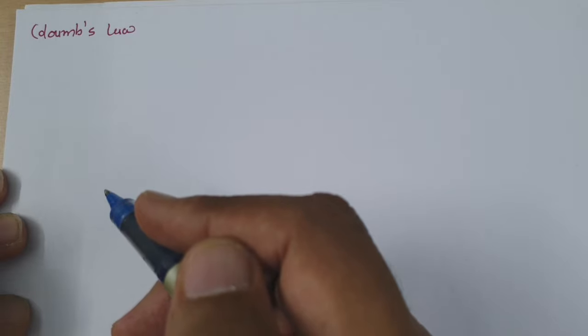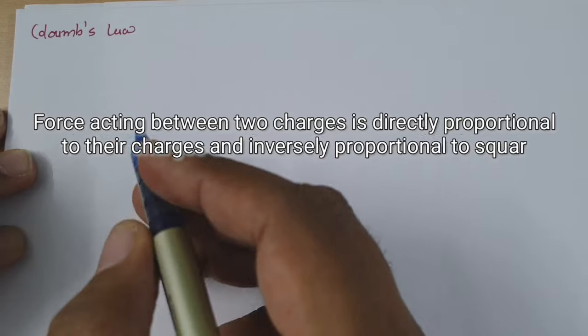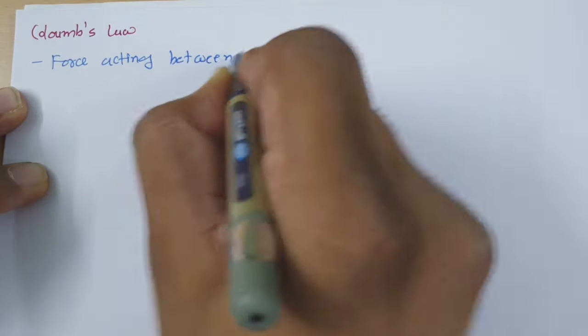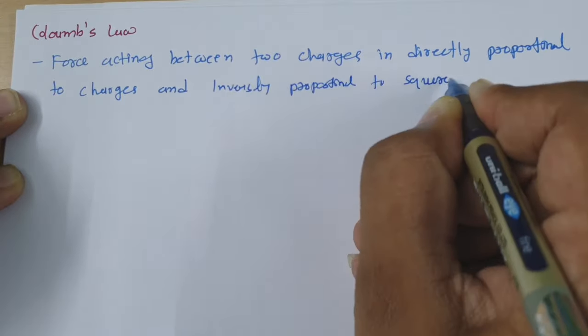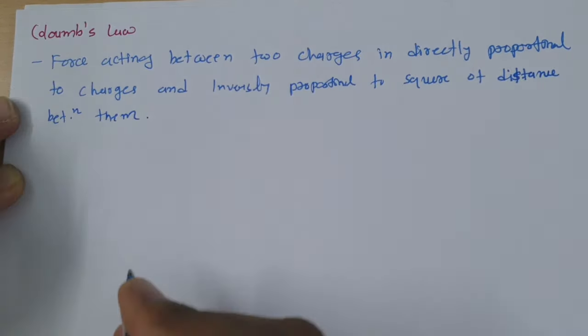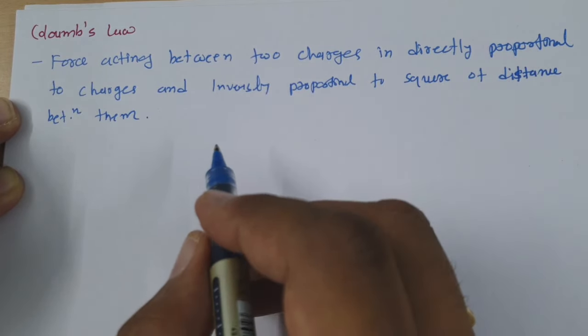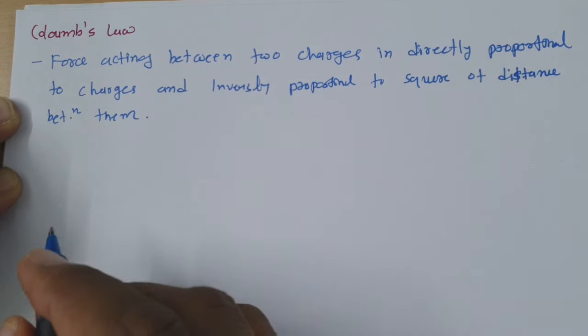What is Coulomb's law? Coulomb's law explains the force acting between two charges. That force is directly proportional to their charges and inversely proportional to the square of the distance between them. Let me write it.